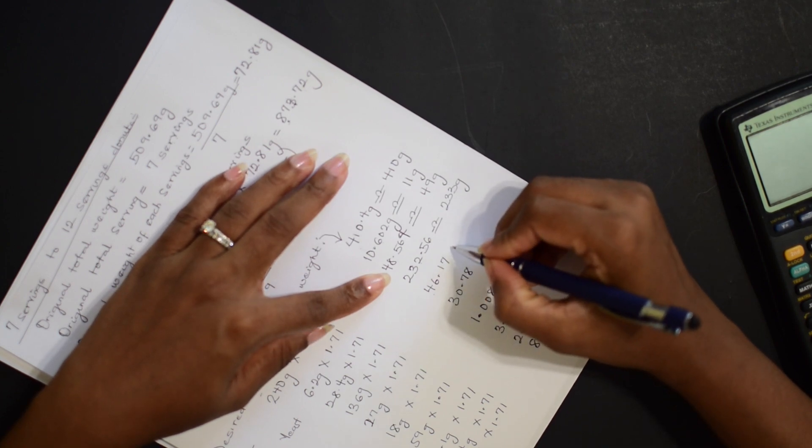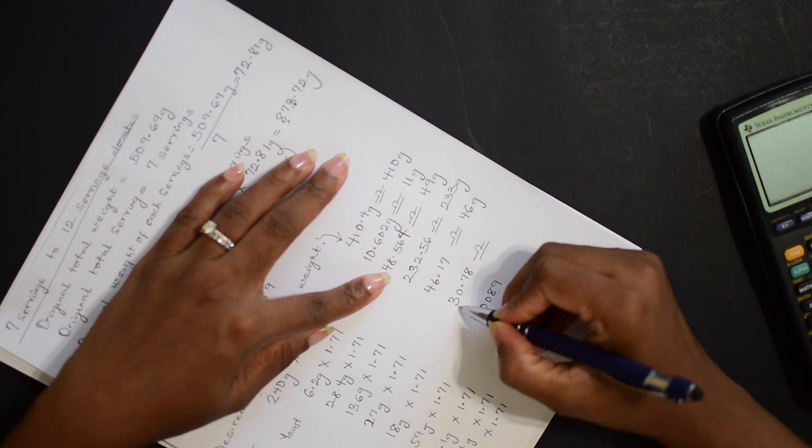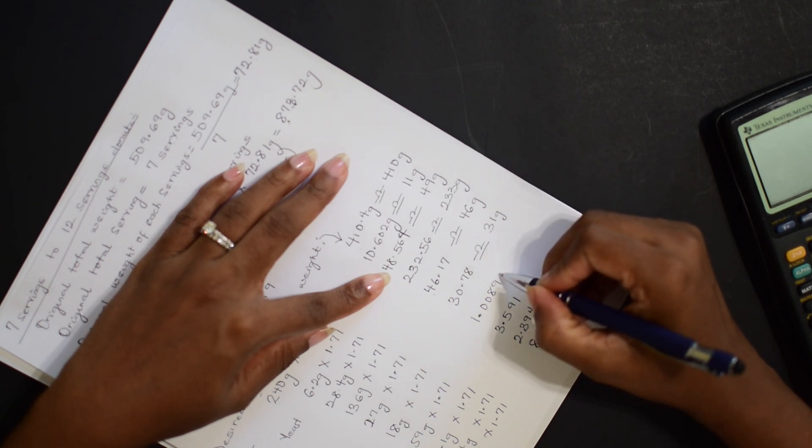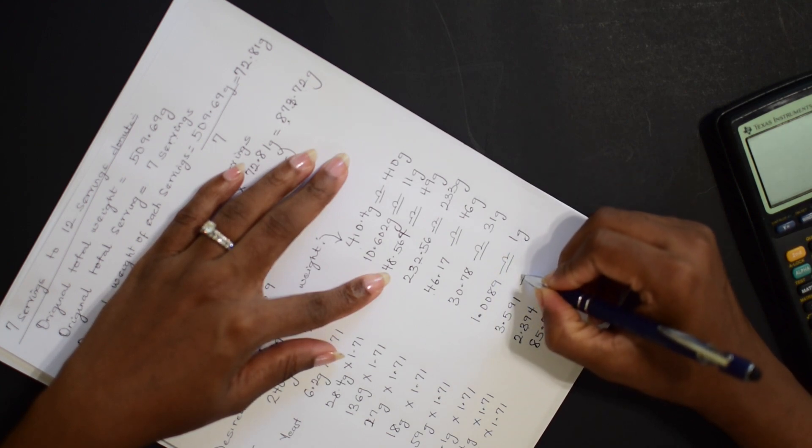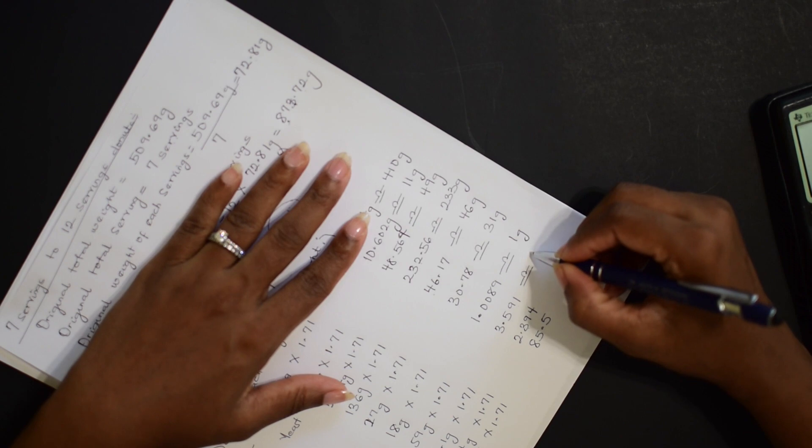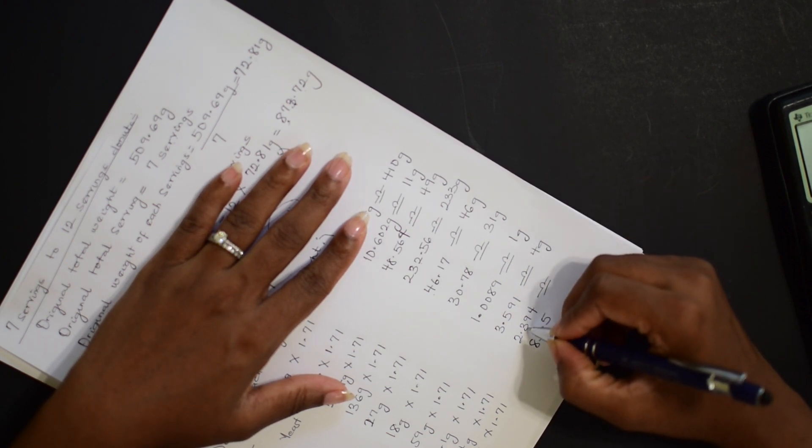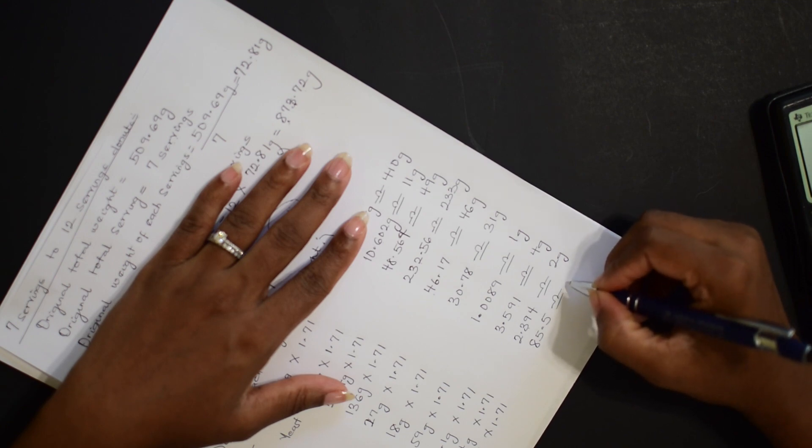So 46.17, that is approximately 46 grams. 30.78, that is approximately 31 grams. 1.00, that's approximately 1 gram. 3.591, that is approximately 4 grams. 2.39, that is approximately 2 grams. 85.5 grams, approximately 86 grams.